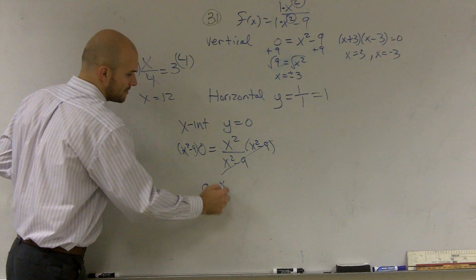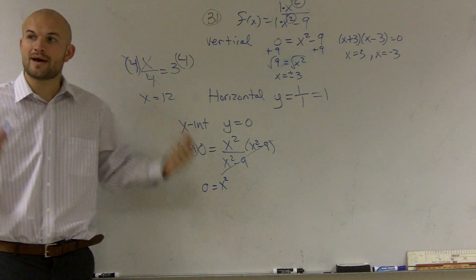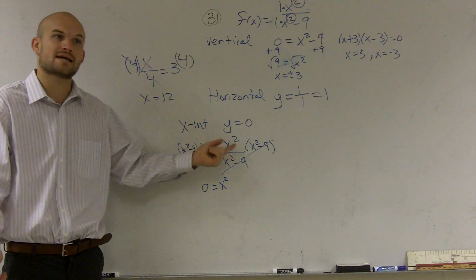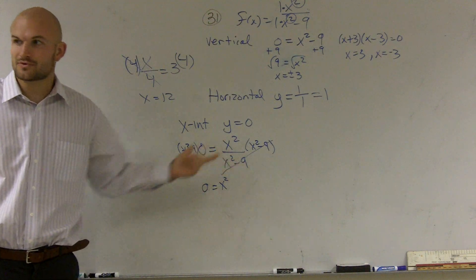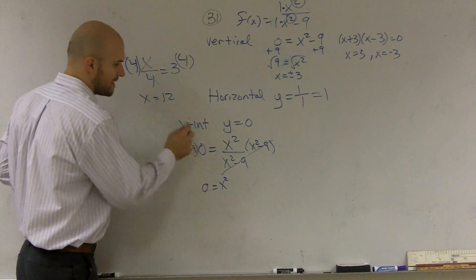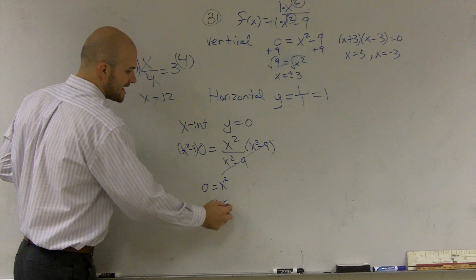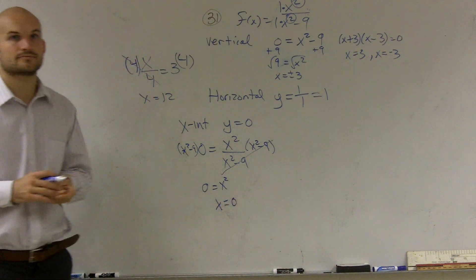And when you do this enough times, hence meaning you did your homework, what you'll notice is the same pattern keeps on occurring. You're really just setting the top equal to 0, because that cancels out and that goes to 0. So when you do your homework, you get a pattern. You notice, I can really just set the top equal to 0, and that's really what's happening. So therefore, my x-intercept is x equals 0.